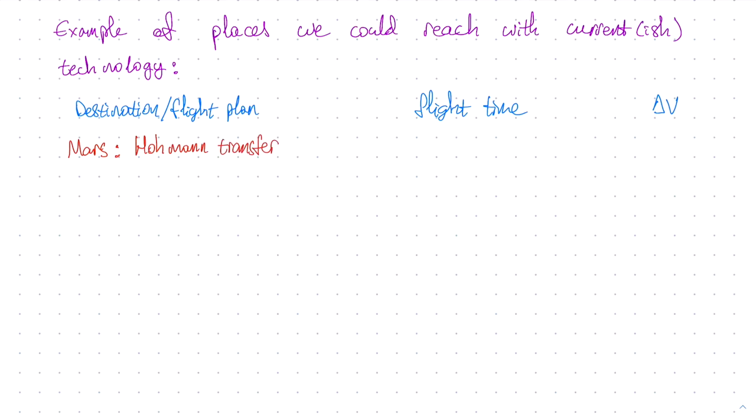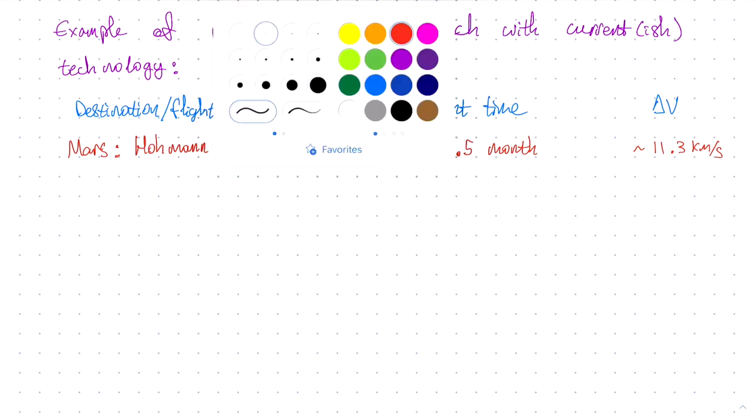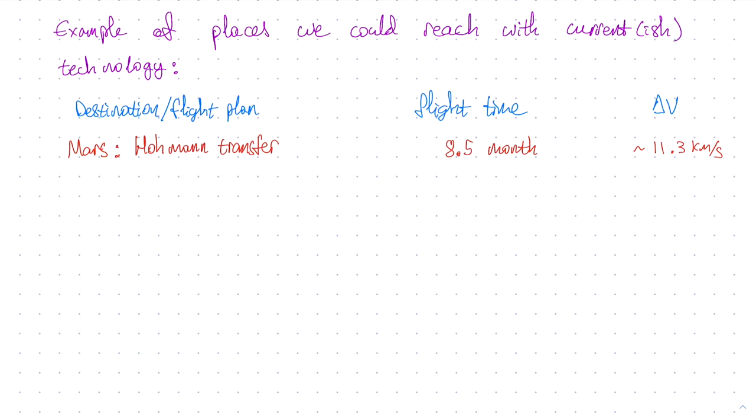And for the flight path, we're going to use the least delta V intensive one, the Hohmann trajectory. Now, what is the flight time from Earth to Mars on the Hohmann trajectory? Well, it's about eight and a half months. And what is the delta V required? It's roughly 11.3 kilometers per second starting with the Earth's surface. That is, this is the total delta V to get to low Earth's orbit and then boost the spacecraft into the Hohmann transfer orbit destination Mars.